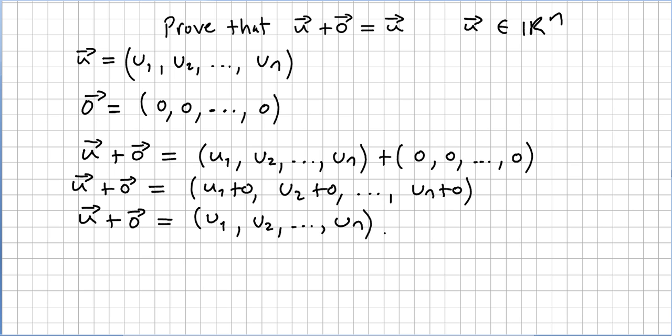So u plus 0 is the same. So what we got here is vector u equals to vector u. And that concludes the proof.